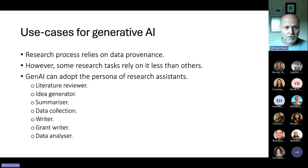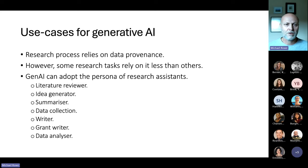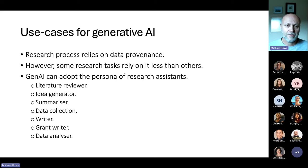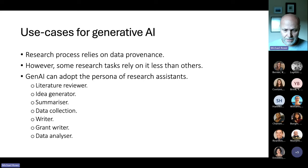Now I'm going to shift and talk about some specific use cases in the research context. The research process relies heavily on data provenance — we need to be able to map conclusions back through the data, interpretation, collection and analysis, instruments, design, all the way to the initial problem, question, and aim. Language models don't do that data provenance very well yet, though they're getting better every day. Not all research tasks rely on that strong link, so I'll give some examples of isolated things we can do.